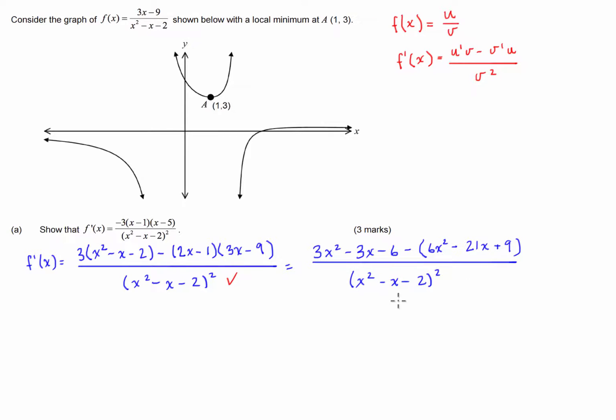Now what we're going to do in the numerator is combine our like terms. So we've got 3x squared minus 6x squared is negative 3x squared. Then we've got negative 3x minus minus 21x, so that's going to be negative 3x plus 21x, which is plus 18x. Then we have negative 6 minus 9 is negative 15, all divided by x squared minus x minus 2, all squared.